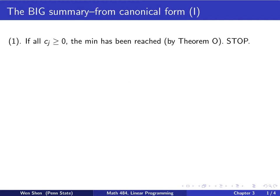Step 1: you will check the coefficients cj. If all of them are bigger than 0, then you know the minimum has been reached. We can invoke theorem O for optimality criteria. Then you stop.